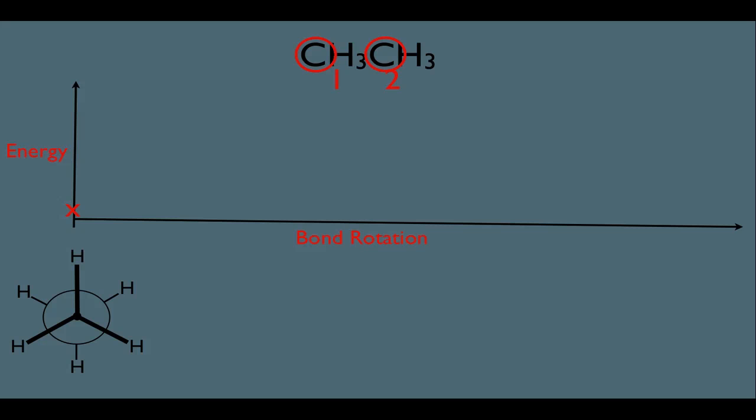Now imagine you start to rotate the bond between carbon 1 and 2 of our molecule. I'm going to use this hydrogen in the red circle as a reference. Let's rotate the bond from our point of view clockwise, which means this hydrogen would move over here. If we moved it that far, that would bring us to the next conformation, which would happen to be the eclipsed conformation. Where should it be on this graph in terms of energy compared to the first Newman projection? Remember, it's an eclipsed structure, and eclipsed conformations are always higher energy than staggered.